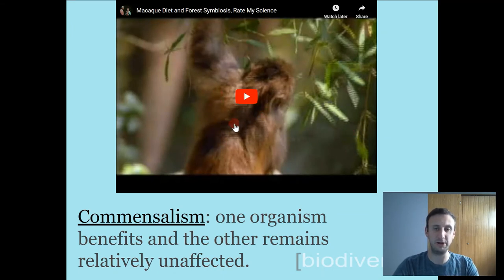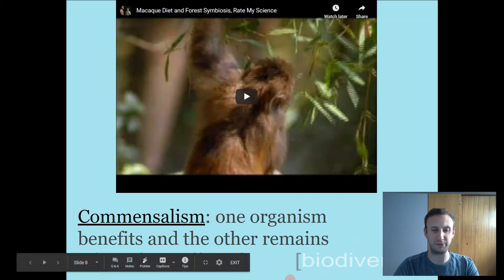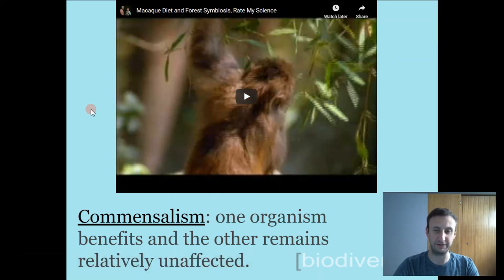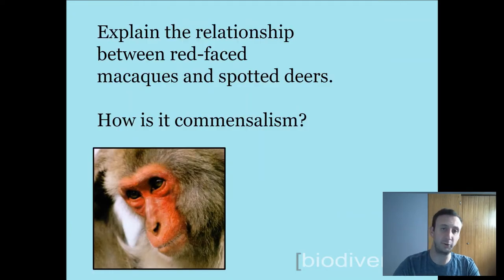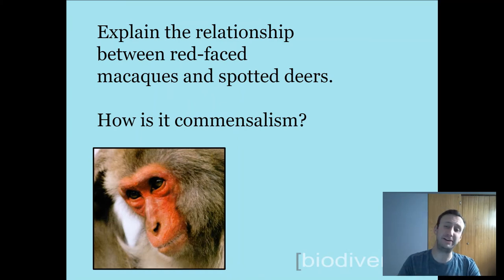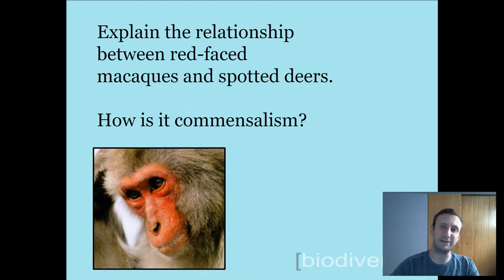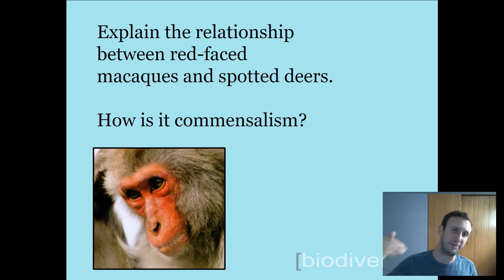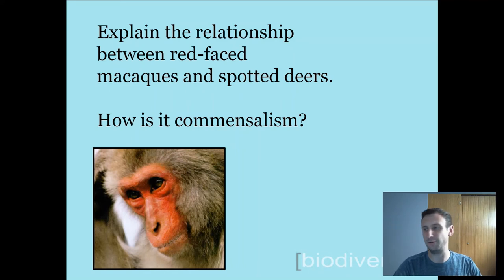Let's take a look at the video for commensalism — when one organism benefits and the other remains relatively unaffected. In this video, the red-faced macaques are unaffected; they don't need the deer in any way and get no advantage from them. But the spotted deer get a huge advantage: they benefit from food on the forest floor and also get a warning system for approaching tigers. The macaques are unaffected while the spotted deer benefit — that's commensalism.